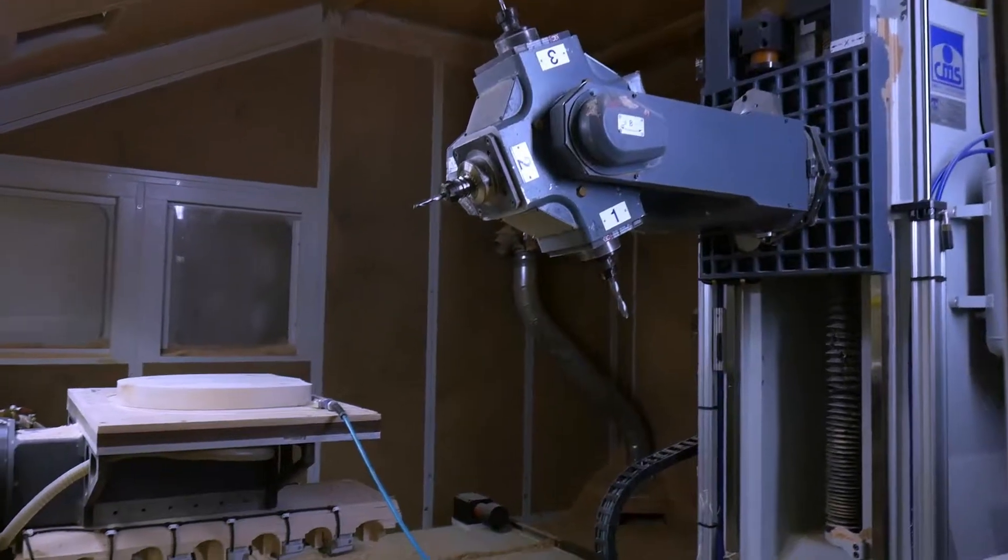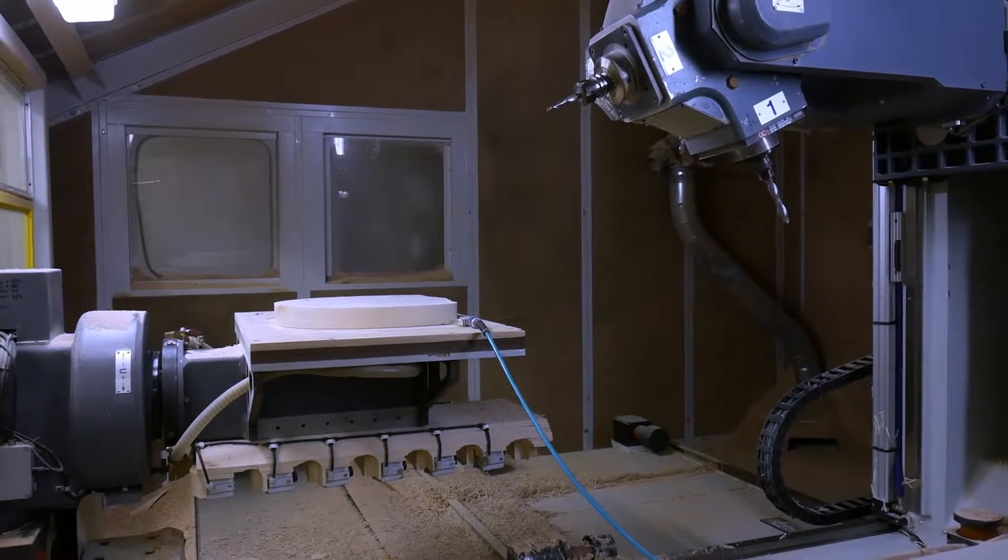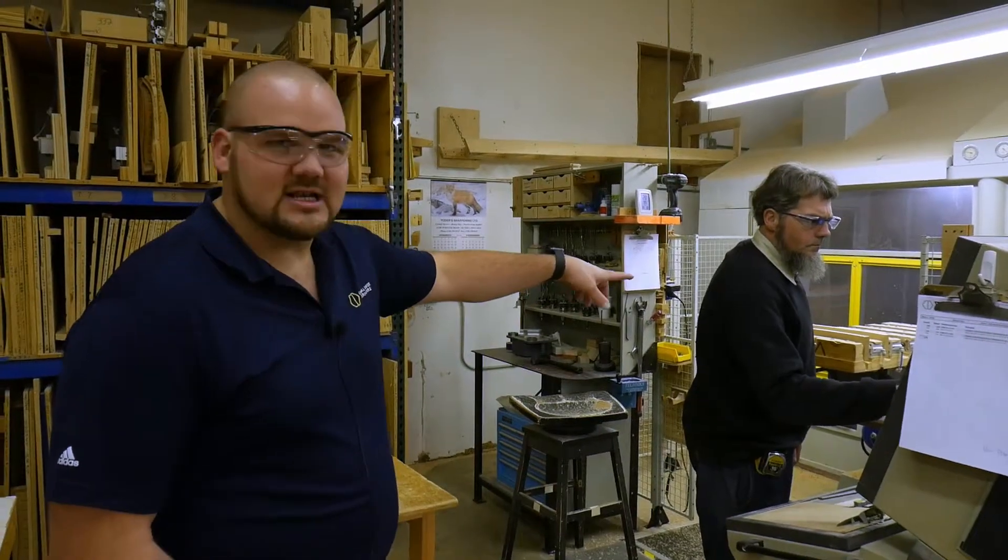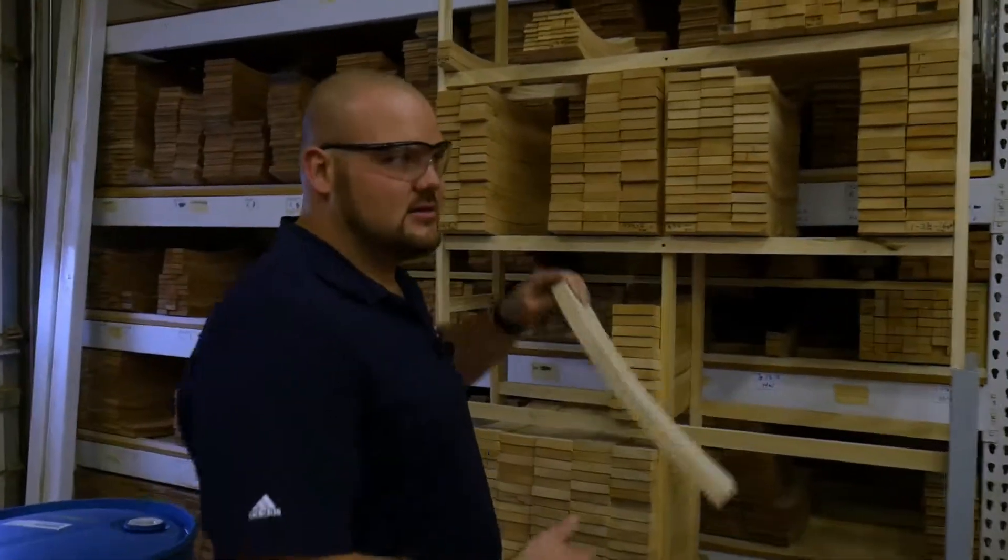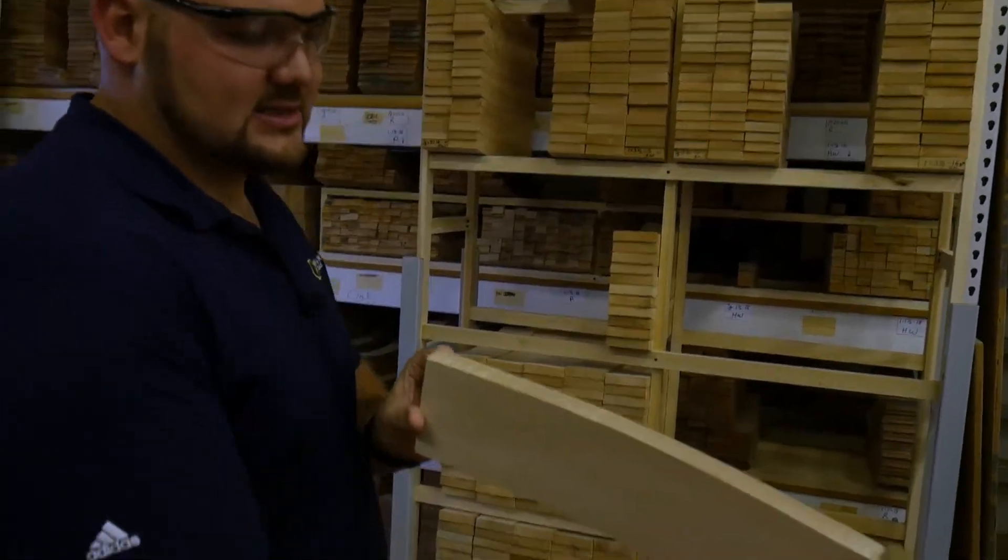Hi guys, what we're seeing here is the CMS5 axis and David here runs that machine. He's going to run some backbends for a chair part. You can see he loads the parts as blanks. They come in as these steam bends.